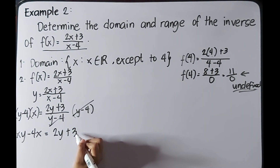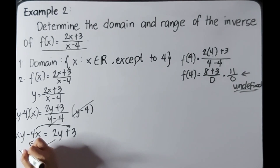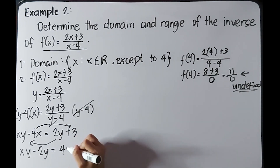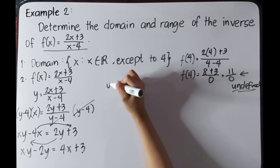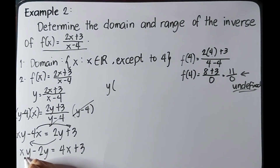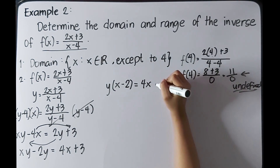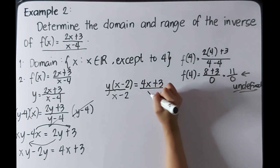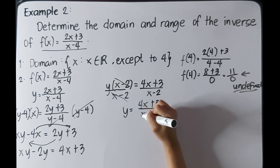Rearranging: xy - 2y = 4x + 3. Factor out y: y(x - 2) = 4x + 3. Divide both sides by (x - 2): y = (4x + 3) / (x - 2). So the inverse function f⁻¹(x) = (4x + 3) / (x - 2).